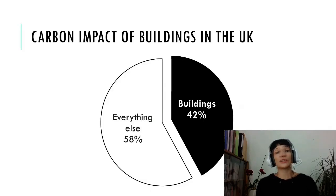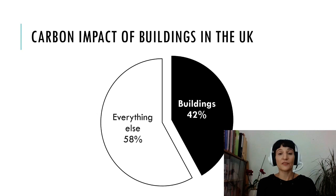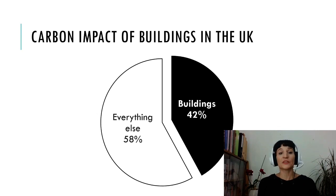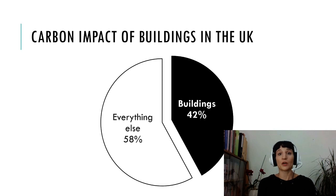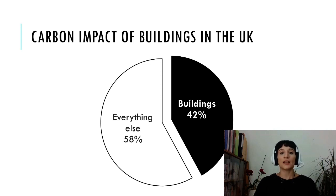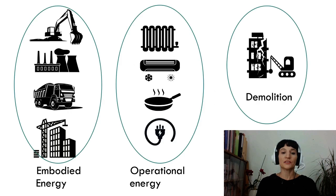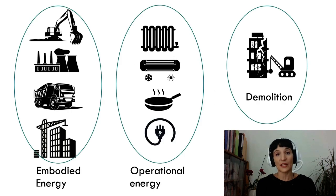Buildings cause a lot of greenhouse gases. In fact, in the UK, buildings cause 42 percent of carbon emissions of the entire country. This is quite a lot. And buildings cause CO2 emissions through their use of energy.